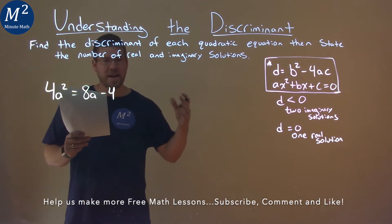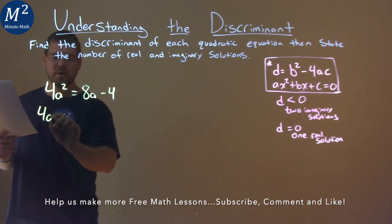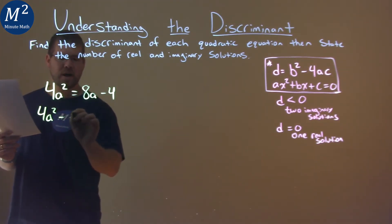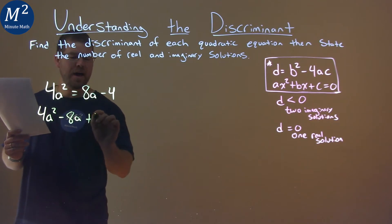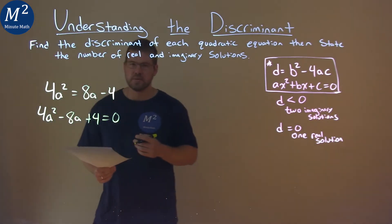First thing is, I want to get everything equal to zero. So I have 4a squared on the left-hand side, I'm going to subtract 8a to both sides, add a 4, and that makes my equation equal to zero.